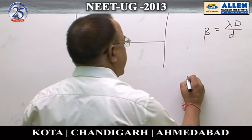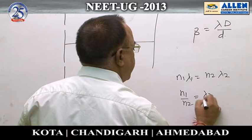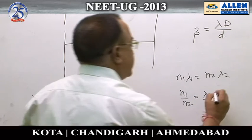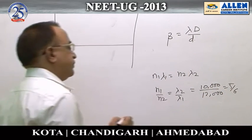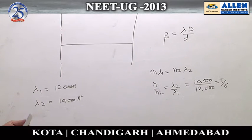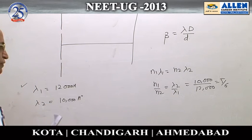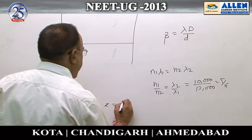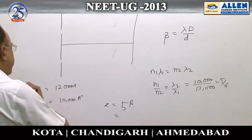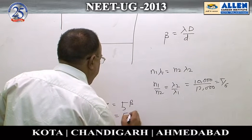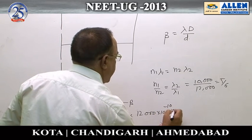That condition is n₁λ₁ = n₂λ₂, which means n₁/n₂ = λ₂/λ₁. Here λ₂ = 10,000 and λ₁ = 12,000, giving me 5 by 6. That means they will again overlap at the position where this light is having its 5th maximum, so the distance will be 5β. We will take beta for wavelength 12,000 Angstrom.